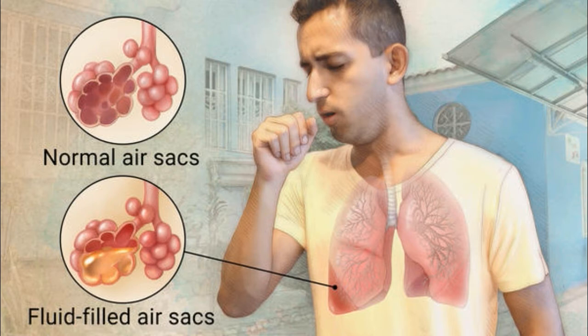Causes: Pneumonia is caused by a number of infectious agents, including viruses, bacteria, and fungi. The most common are Streptococcus pneumoniae, the most common cause of bacterial pneumonia in children; Haemophilus influenzae type B (Hib), the second most common cause of bacterial pneumonia; and Respiratory syncytial virus, the most common viral cause of pneumonia.